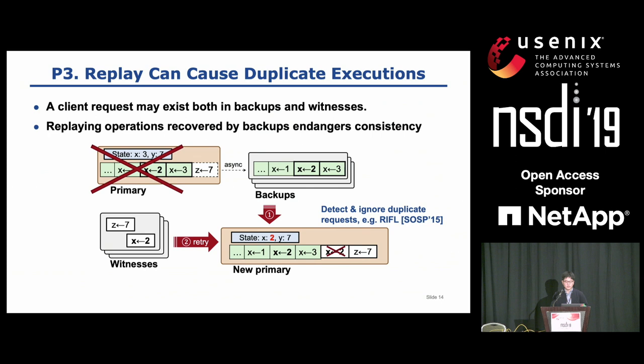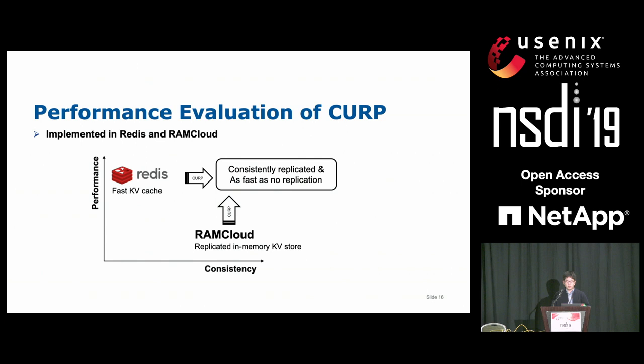We implemented CURP on top of Redis. Redis is a fast key-value cache which may lose data in case of crash. By applying CURP, I could make Redis consistent without impacting its performance too much. On the other hand, RAM Cloud already does consistent three-way replication, and by applying CURP, I could improve the performance of RAM Cloud. Due to time limitations, I will only show you the evaluation of the RAM Cloud implementation today.